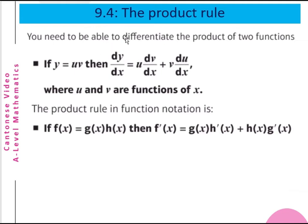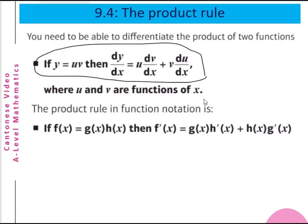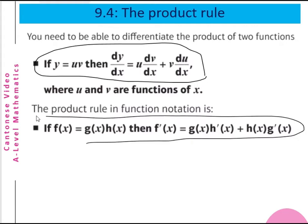If you need to be able to differentiate the products of two functions, if y equals u multiplied by v, then dy/dx is equal to u dv/dx plus v du/dx. This is called the product rule, where u and v are functions of x. The product rule in function notation is that if f(x) equals g(x)·h(x), then f'(x) equals g(x)·h'(x) plus h(x)·g'(x). This is the function notation of the product rule.